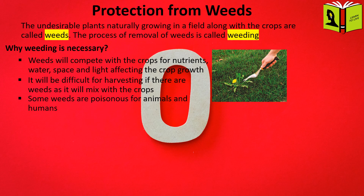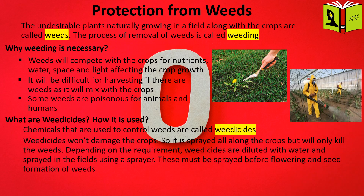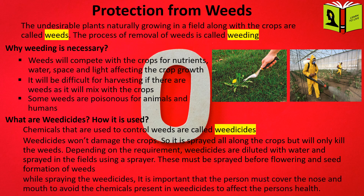So weeding is necessary. What are weedicides and how are they used? Chemicals that are used to control weeds are called weedicides. Weedicides won't damage the crops, so they are sprayed all along the crops but will only kill the weeds. Depending on the requirement, weedicides are diluted with water and sprayed in the fields using a sprayer. These must be sprayed before flowering and seed formation of the weed. While spraying weedicides, it is important that the person must cover their nose and mouth, to avoid the chemicals affecting their health.